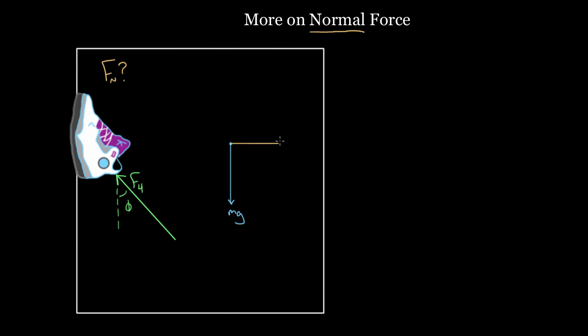So the wall is gonna push to the right on the shoe to keep the shoe from penetrating this wall. So that's a little bit weird for people, is that this normal force is now pushing to the right. And I've got one more force. I've got my F4. I'm gonna draw this force, F4 looks something like that. Okay, so these are my forces.